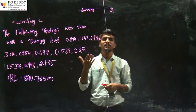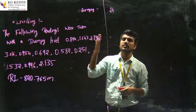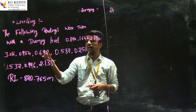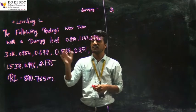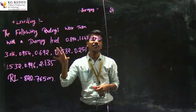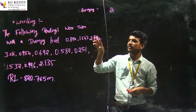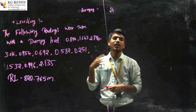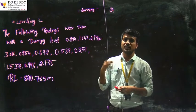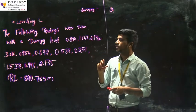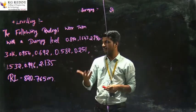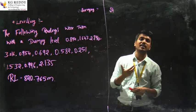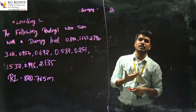Each station means: first station, second station, third station, fourth station, fifth station, sixth station, seventh, eighth, ninth, tenth, and eleventh stations are to be included in this survey. You have to calculate all the reduced levels of each station. The RL is 820.765, which is the main reference of the first RL.